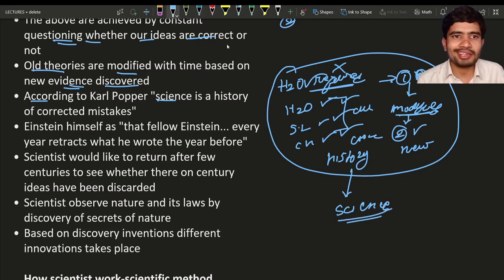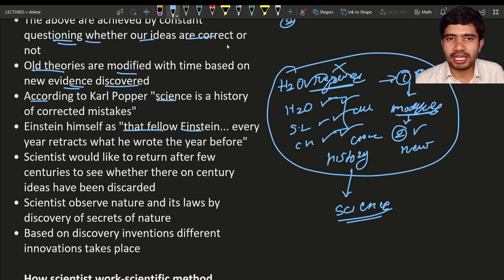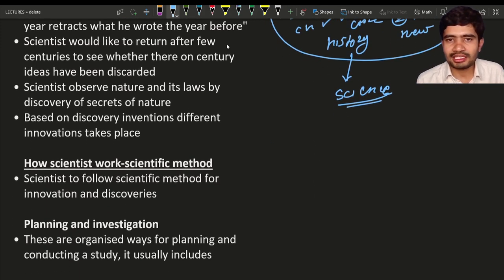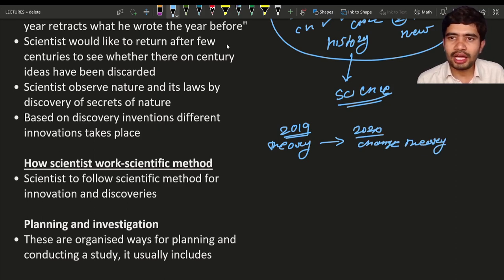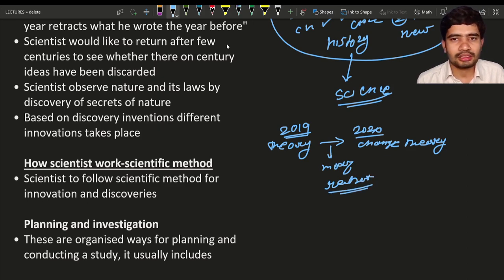Einstein said about himself: every year he retracts what he wrote the year before. For example, Einstein says some theory in 2019; in 2020 he will change that theory — he will do some modifications or retract it. Retract means taking back. That is the kind of constant revision done by Einstein.